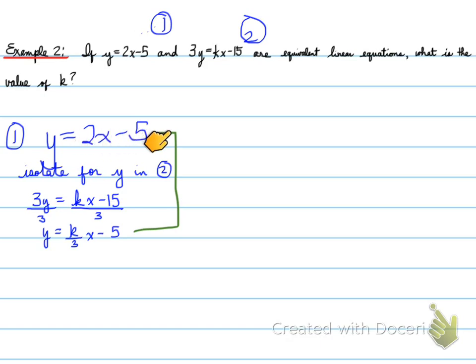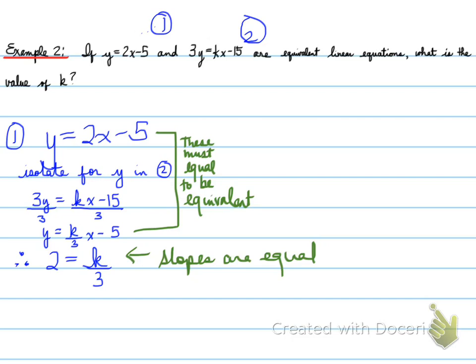Now note, these two equations have to equal each other. Both of these equations must equal in order to be equivalent. Well, notice that their y-intercepts are equal. So that means their slopes have to also equal. So k over 3 must equal 2. We find the value of k by moving the 3 over by multiplying, and we find out that k is equal to 6. And that's your final answer. So you can just circle it, and that's enough for you to get the full marks.